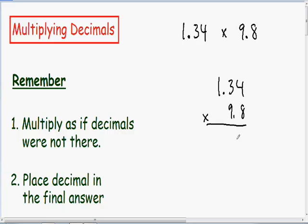The one thing you have to remember to do is you need to multiply as if the decimals were not even there. So let's just imagine that these decimal points didn't even exist and let's just multiply these two numbers as if they weren't there.